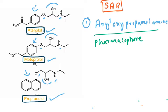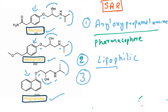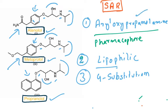At the amine end, all drugs have an isopropyl or isobutyl group — both are lipophilic in nature, so a lipophilic group at the amine end is required. Looking beyond propranolol at the other drugs, there is a substitution at the 4th position of the aromatic ring, so para-substitution is allowed and retains activity. These are the primary SAR features: the pharmacophore, the lipophilic group at the amine end, and permitted para-substitution.